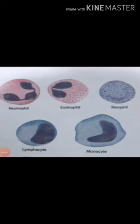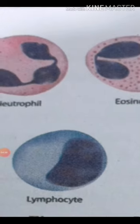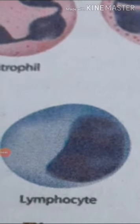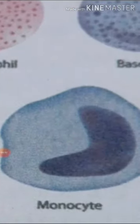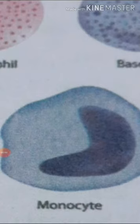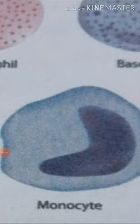Agranulocytes: granules are not found in the cytoplasm of these cells. They are of two types: lymphocytes and monocytes. Lymphocytes constitute about 20 to 25% of total leukocytes. They produce antibodies during bacterial and viral infections. Monocytes are the largest of the leukocytes and are amoeboid in shape. They form 5 to 6% of total leukocytes. They are phagocytic and engulf bacteria.